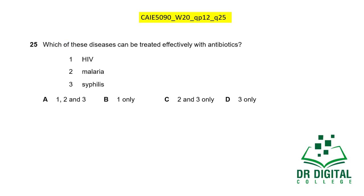In this question, which of these diseases can be treated effectively by antibiotics? Antibiotics are for bacterial diseases. HIV is a viral disease. Malaria is caused by Plasmodium, a unicellular organism. Syphilis is caused by Treponema pallidum, which is a bacterium. So syphilis can be treated with antibiotics. The answer is D.